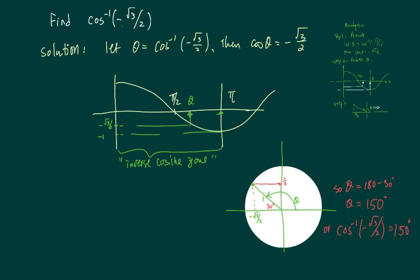Write it all together. Cosine inverse of minus radical 3 over 2 is equal to 150 degrees. I hope this helps.